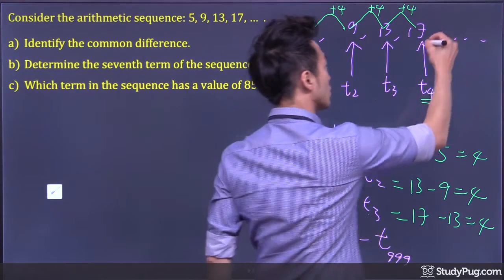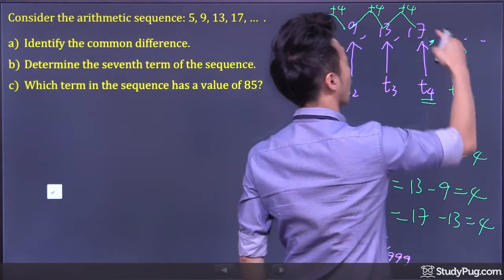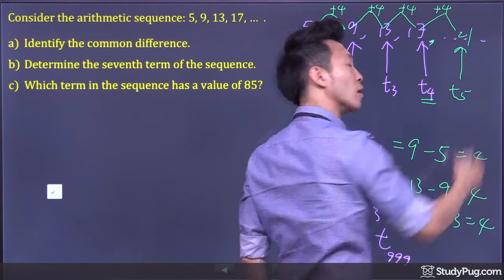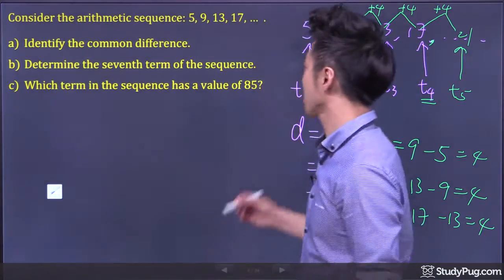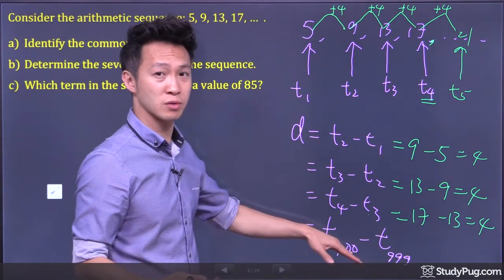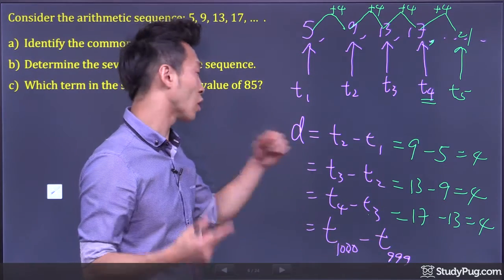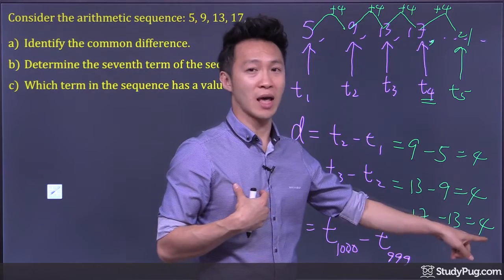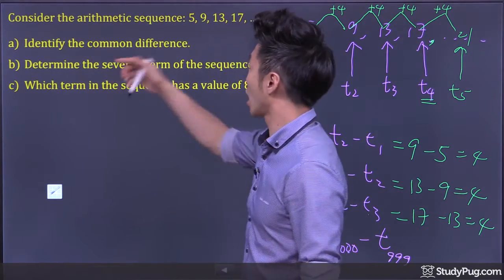In fact, we can even predict term number 5—that would be what? 17, you also add 4, that would be 21. So anyways, the common difference, it doesn't matter which pair we choose, as long as we have one term subtracting the term before it, we will always get the answer 4 as the common difference.